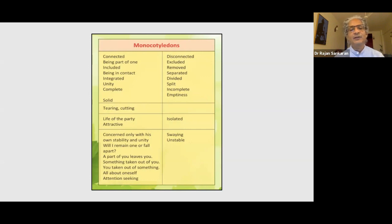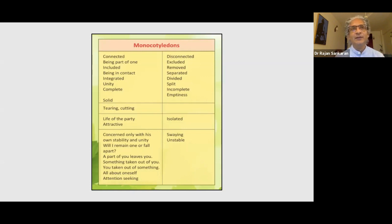In the monocot you can see concern with its own stability — as if a part of you leaves you, something is taken out of you, you become incomplete. Many grasses also fall here in monocots, the Gramineae for example, so you have the swaying and the unstable state as well.